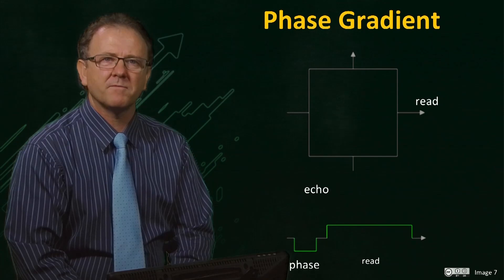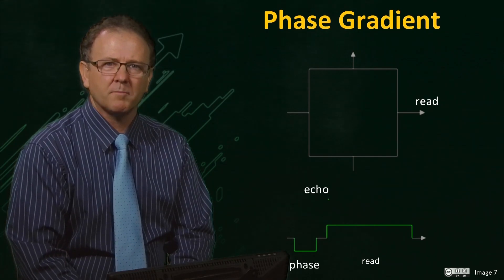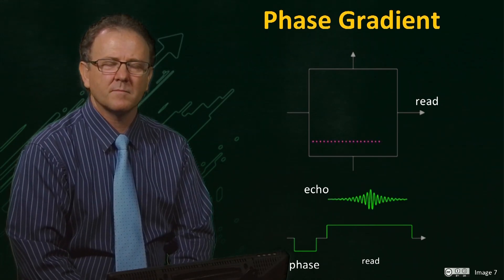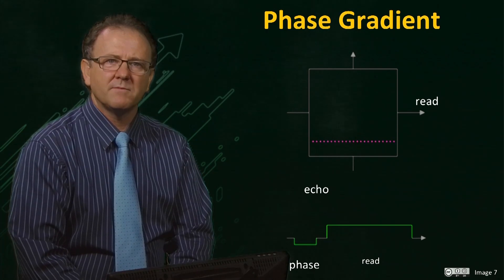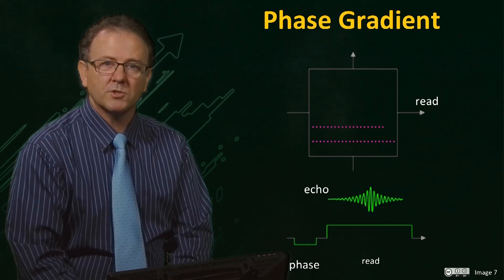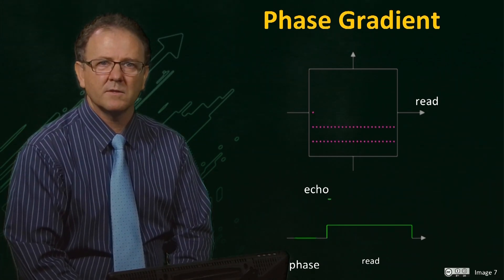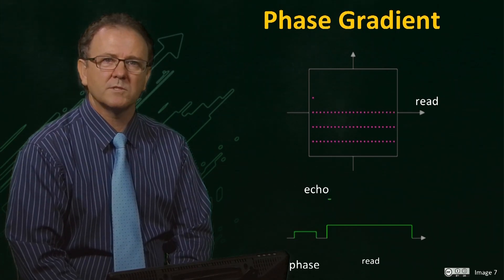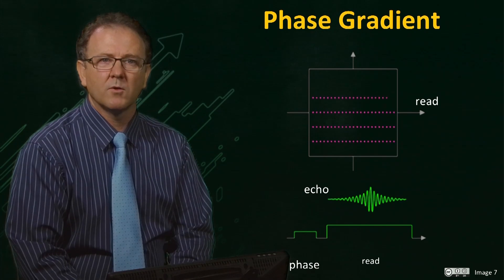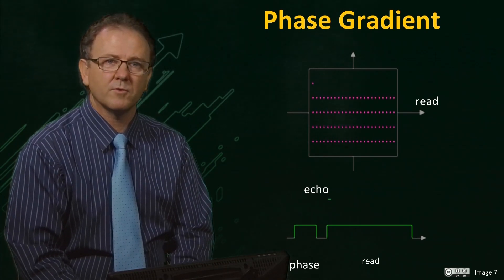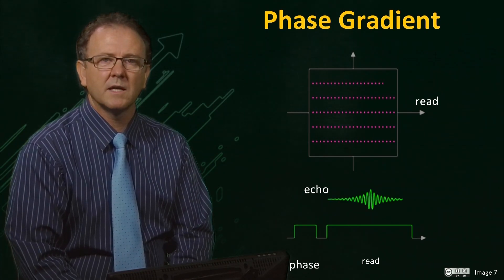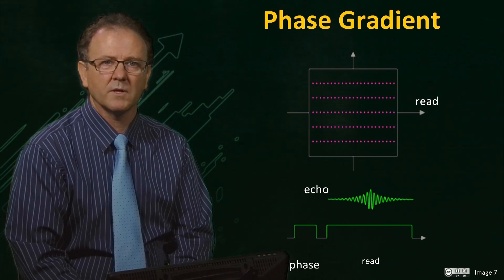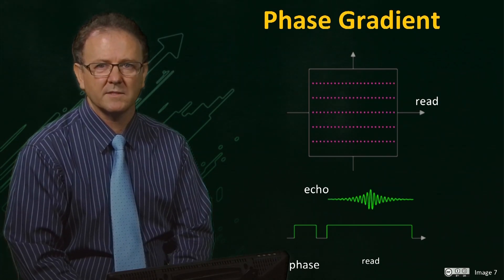We now apply the phase gradient as a short pulse prior to the read gradient. This gradient dephases the magnetisation, modulating the intensity of the echo as a function of the phase gradient's strength. The sequence is repeated a number of times, ramping the phase gradient, often from negative to positive values, and the echoes are stored in the computer as a two-dimensional array of intensity values.